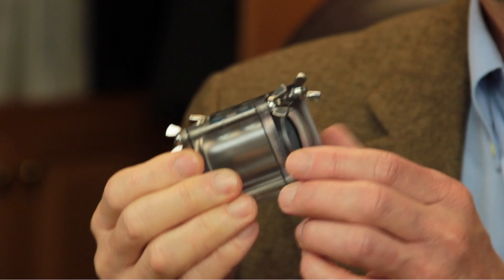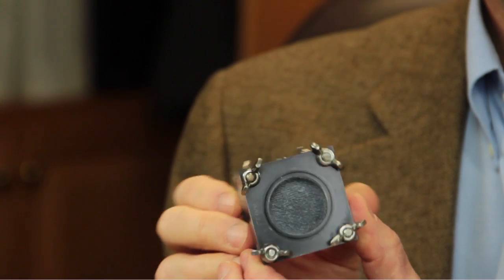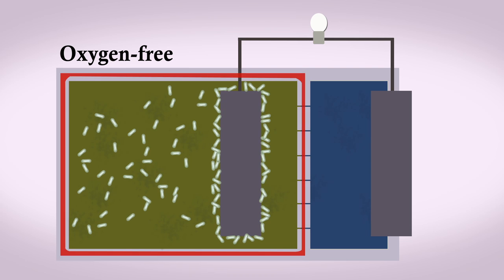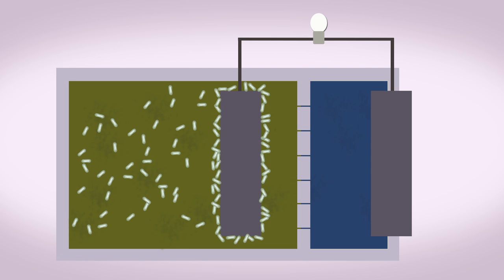This is a microbial fuel cell. It's really a very simple device. It's just a tube with electrodes on either side of that tube, one which is sealed off so the bacteria can't get at the oxygen, the other one which is exposed to oxygen.